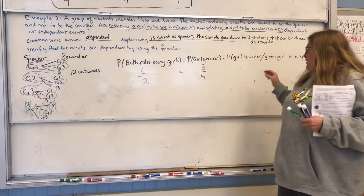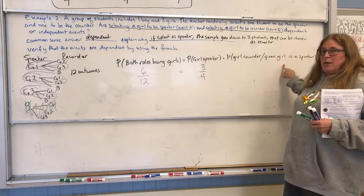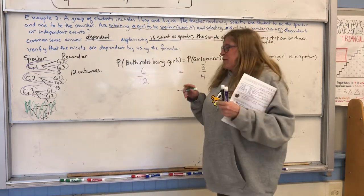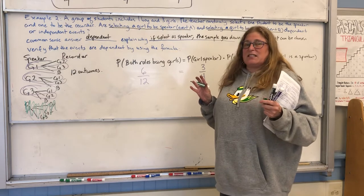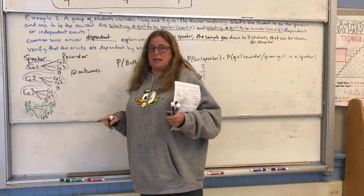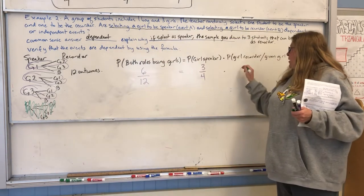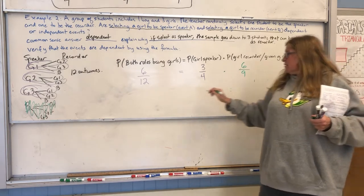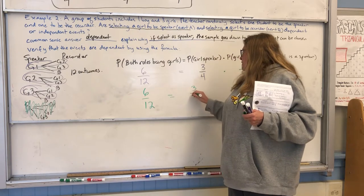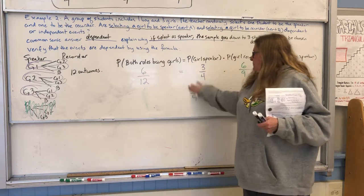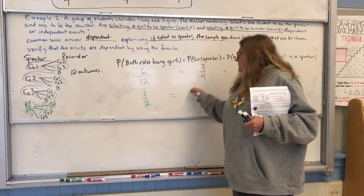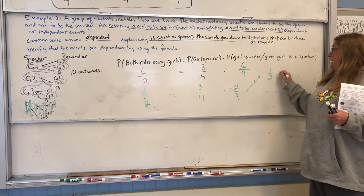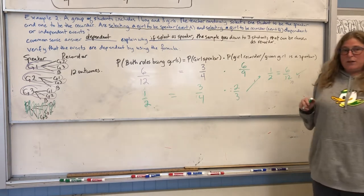Now here's the one I had my senior moment about. What's the probability that a girl is a recorder given that we already picked a girl as the speaker? Well, if that's the case, we've got to cross out anything where the boy was the speaker. So now our total sample space is nine instead of 12. We still have six possible outcomes for a girl being the recorder, but instead of out of 12, it's now out of nine. So is it true that 6/12 equals 3/4 times 6/9? Six over 12 is one half; three over four times six over nine reduces to two thirds — wait, one half does equal six over 12. Yes, we have proven that those are dependent events.